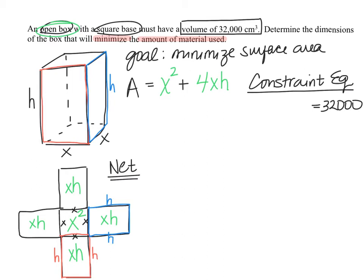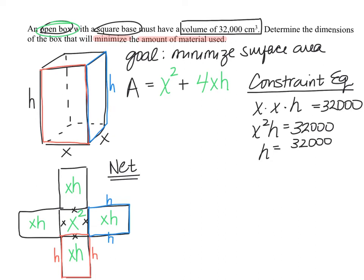The volume of this rectangular prism is length times width times height. With our labels that's X times X times H, or X²H = 32,000. Now we solve for one variable — it's easiest to solve for H by dividing by X squared, giving H = 32,000 / X². I'll put a box around this equation because it's a key relationship between X and H.